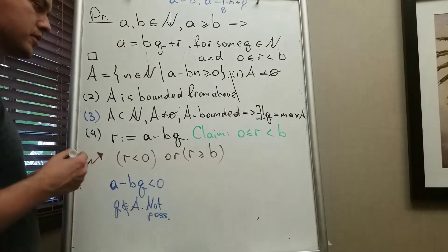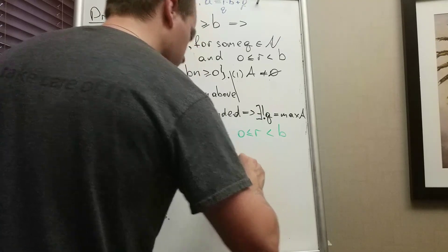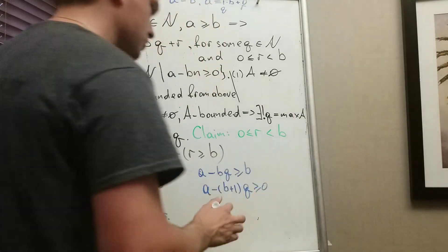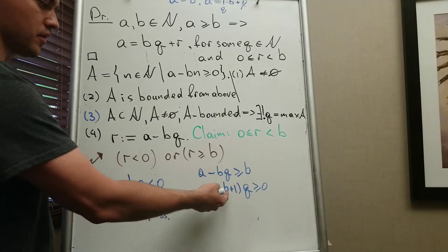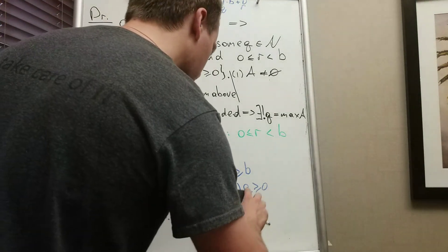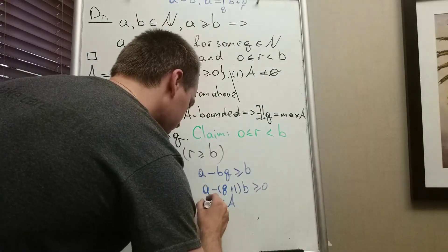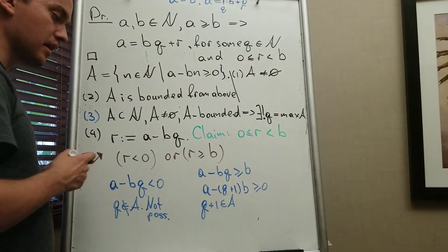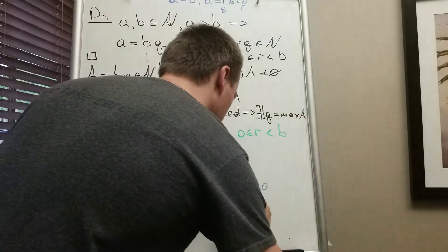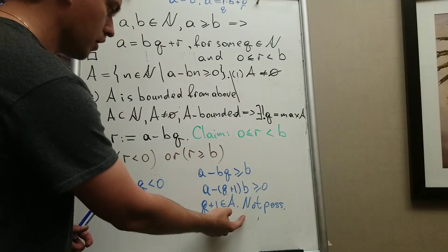For the second case, suppose R ≥ B. Then A − BQ ≥ B, which means A − B(Q + 1) ≥ 0. So Q + 1 belongs to A. But Q is the maximum element of A, and Q + 1 > Q, which contradicts Q being maximal. So R ≥ B is also not possible.